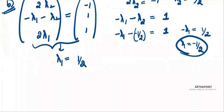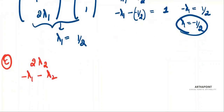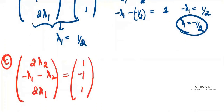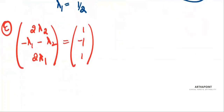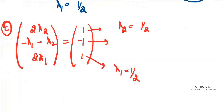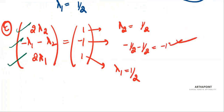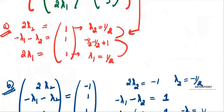Let's look at the third vector (1, -1, 1). The first equation gives 2λ₂ = 1, so λ₂ = ½. The second equation gives λ₁ = ½. Putting λ₁ = ½ and λ₂ = ½ into the third equation: 2 × ½ = 1. That is satisfied! So the third vector satisfies all three equations simultaneously, giving a consistent answer.